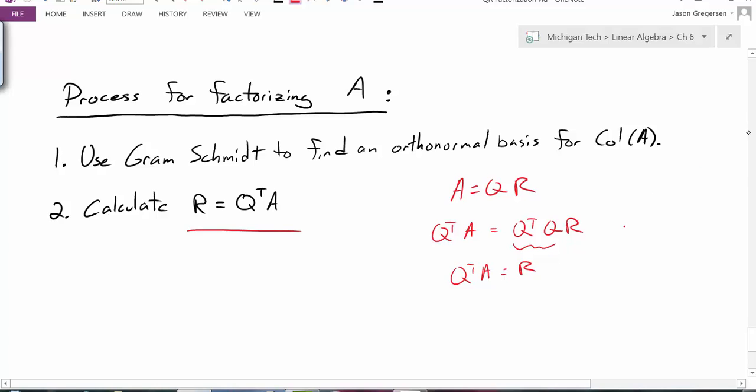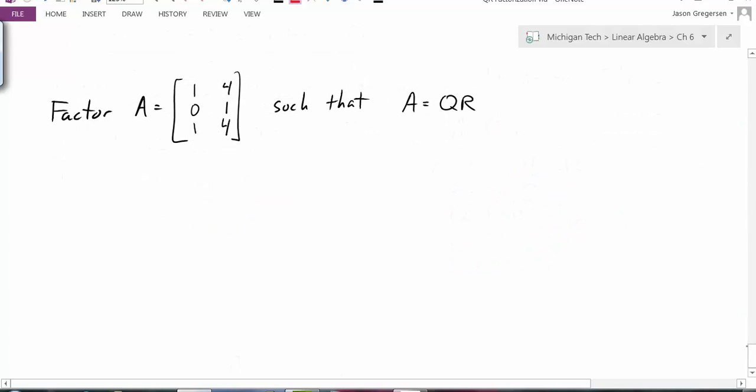Let's look at this process in a specific example. So here we have our matrix A. And we want to factor A to get our QR factorization, to find the Q and the R such that A is equal to Q times R.